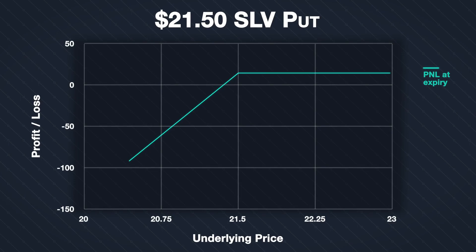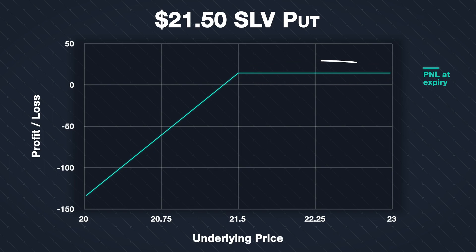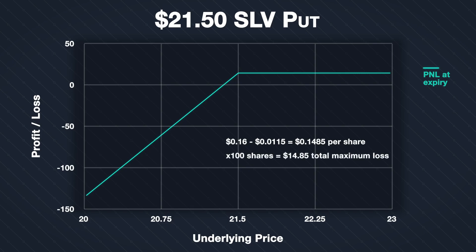Given those parameters, here is the P&L chart at expiry for this option position. For any price of SLV above the strike price of $21.50, we make the maximum possible profit, which is limited to the premium collected minus fees. We collected 16 cents per share and fees were $0.0115 per share, giving a total credit per share of $0.1485. With a contract multiplier of 100 and one contract sold, the total maximum profit is $14.85, which matches the total credit shown on tastyworks when we placed the order.